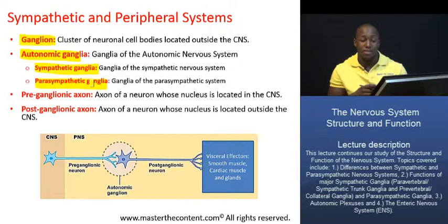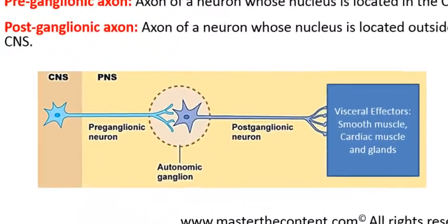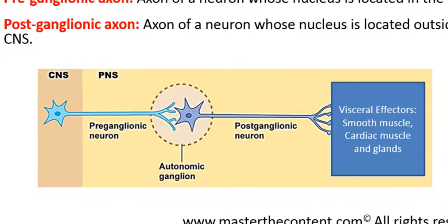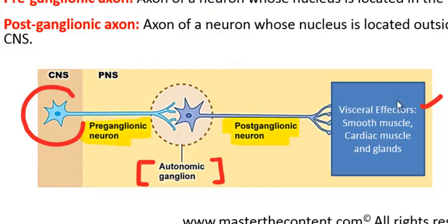We've already talked about what a pre- and post-ganglionic axon is — commit that to memory, as it's important for understanding the peripheral nervous system. At the bottom of the screen is a diagram that very accurately illustrates the difference. The pre-ganglionic neuron has its cell body in the central nervous system, where it synapses with a post-ganglionic neuron in an autonomic ganglion. That post-ganglionic neuron is responsible for carrying impulses to the visceral effectors, which in the case of the ANS is smooth muscle, cardiac muscle, and glands around the body.